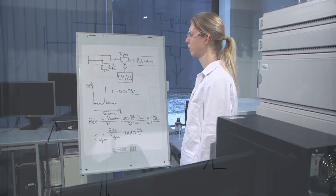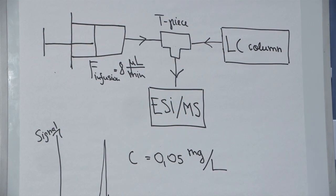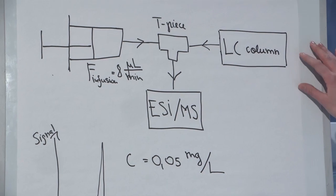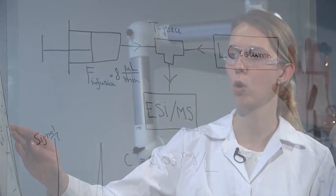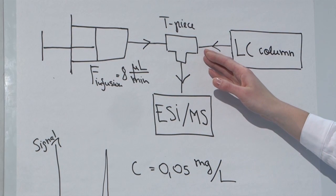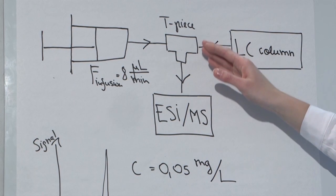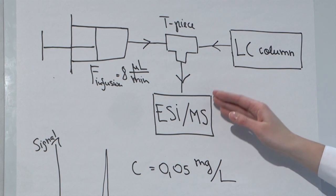Hello. In this video we'll talk about evaluation of matrix effect qualitatively. For this purpose we will use the post-column infusion method. We will inject our matrix sample to the LC column and mix the effluent from the LC column with the standard solution that is pumped with the infusion pump. These solutions are mixed together in the T-piece and then directed to the mass spectrometer.